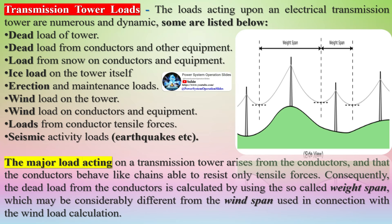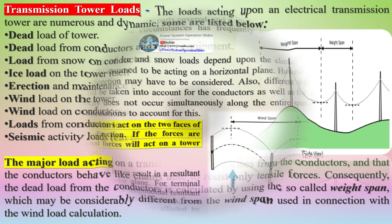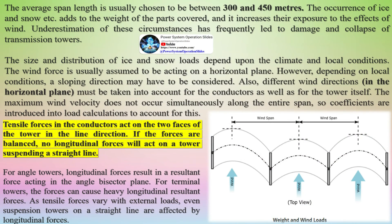The loads acting upon an electrical transmission tower are numerous and dynamic. These include: dead load of the tower; dead load from conductors and other equipment; load from snow on conductors and equipment; ice load on the tower itself; erection and maintenance loads; wind load on the tower; wind load on conductors and equipment; loads from conductor tensile forces; and seismic activity loads such as earthquakes.